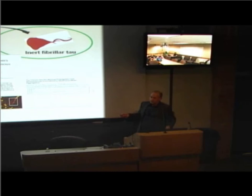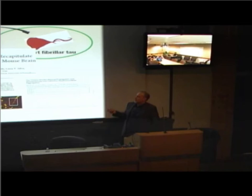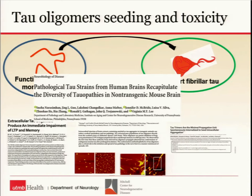One finding I was proud of: we used wild-type mice, but at the time people believed propagation only happened in mutant tau mice like the P301S model. We saw it in wild-type, and a few months ago Virginia Lee's group did the same experiment with different preparations — taking tau aggregates from Alzheimer's, PSP, and other tauopathies and injecting them into non-transgenic mice, seeing different phenotypes.